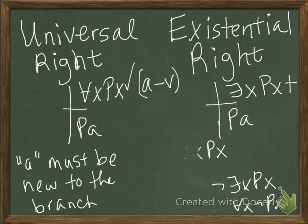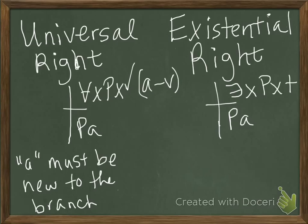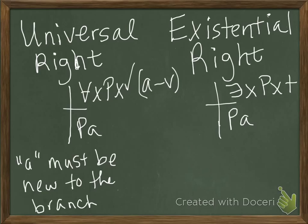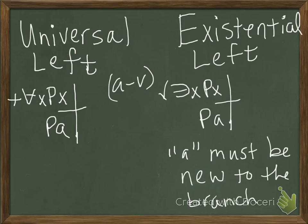The easiest way to remember which ones get the restrictions, which ones get a checkmark, and which ones are plus rules is to focus on the left-hand side ones, which mirror exactly how we do it in proofs. In proofs, we can instantiate a universal to any letter a through v and do it more than once, whereas the existential has the restriction on e out. So remember the left-hand side ones, and then just remember that the right-hand side ones are the opposite of the left-hand side ones.